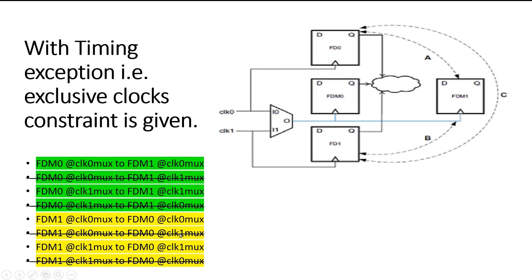A third type of ignored path: FDM1 working at clock zero mux to FDM0 working at clock one mux — clock zero mux and clock one mux cannot exist together. And the last ignored path: FDM1 at clock one mux to FDM0 at clock zero mux — also ignored. So the tool will only care when FDM0 and FDM1 are working at the same clock, either both at clock zero mux or both at clock one mux. The timing analyzer tool will also only take care of these same-clock paths. Other paths will be ignored, so 50% of the effort is reduced, PNR tool time is reduced, and it becomes very easy for timing closure.